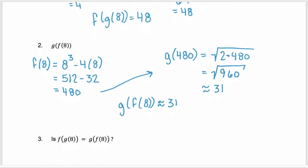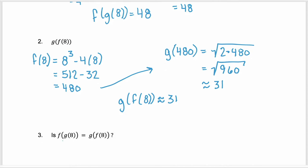That brings us to question three. Is f of g of eight equivalent to g of f of eight? No. This is a big fat no. Order matters. You have to start with the innermost function and evaluate outwards. So 48 is never equal to 31.